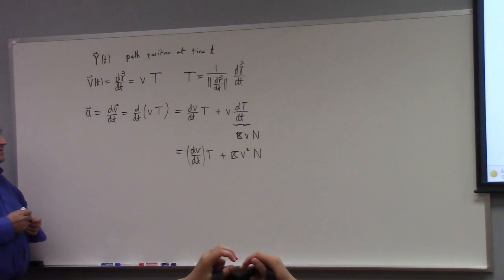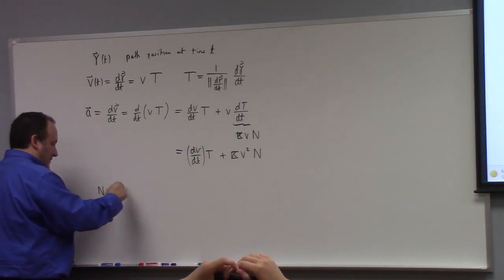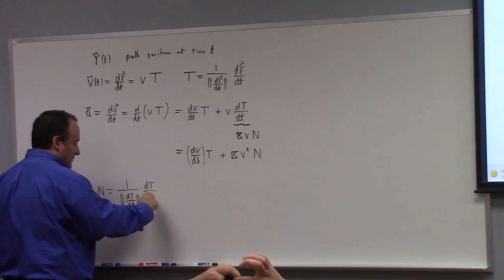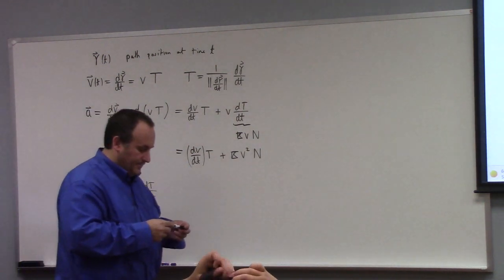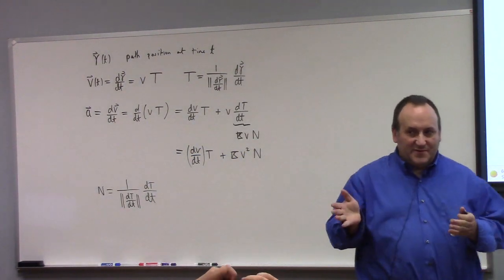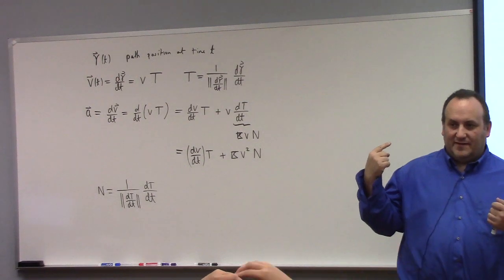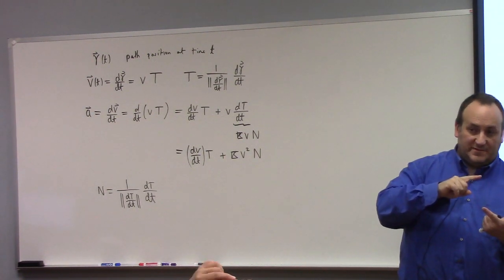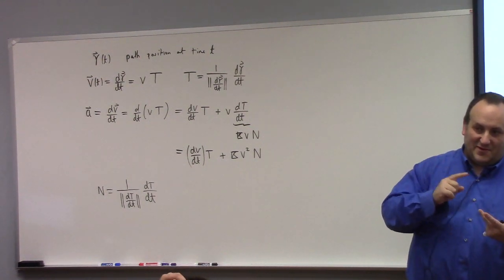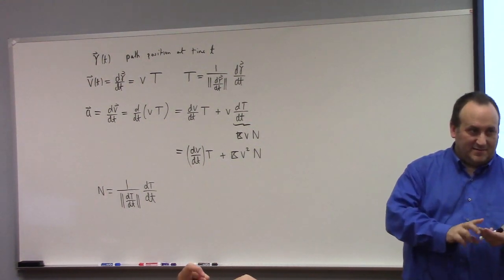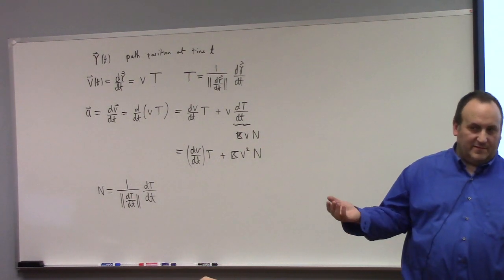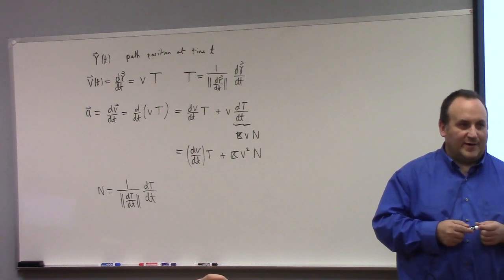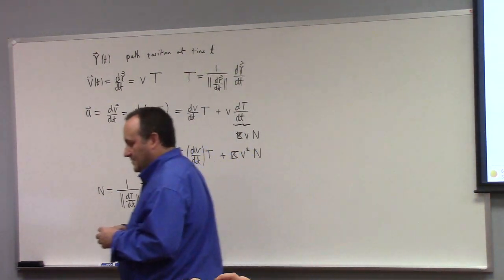So your question is how to calculate N. N by definition is 1 over the magnitude of dT/dt, times dT/dt — that's how we define the Frenet normal. Although it is true that if you were given the acceleration, the unit tangent, the curvature, and the speed, you could put those things together and calculate the normal from that data, but that would be a weird problem. Any other questions?